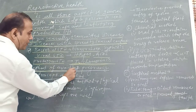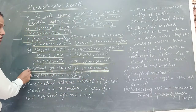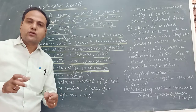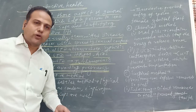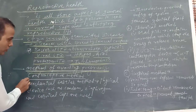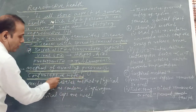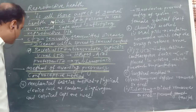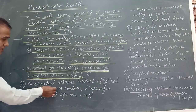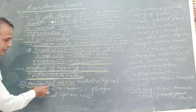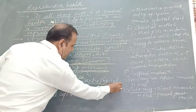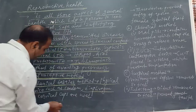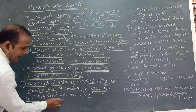The next important topic is methods of avoiding pregnancy, which is at least a three-mark question in examinations. It is also called the contraceptive method or method of population control. The first contraceptive method is the mechanical barrier method.